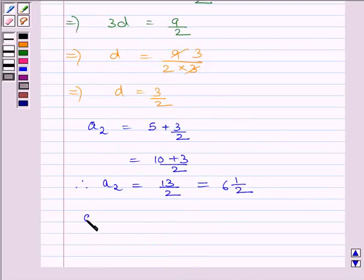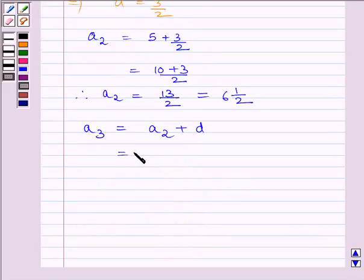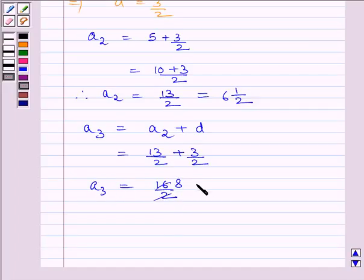We can find a₃, the third term of the AP, by adding d to a₂. So a₃ = 13/2 + 3/2 = 16/2 = 8.